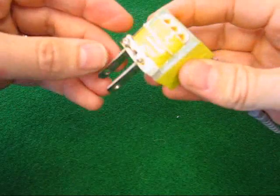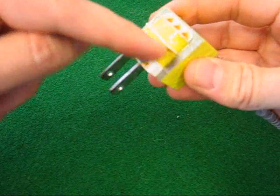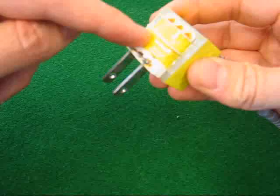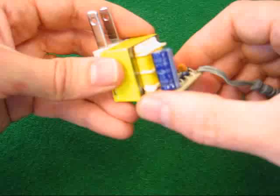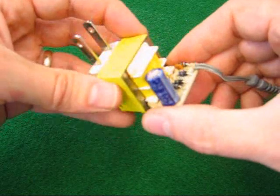The transformer has a primary coil behind this yellow tape. Here's the secondary coil. It outputs a much lower voltage, around 9 volts, but it's still AC.